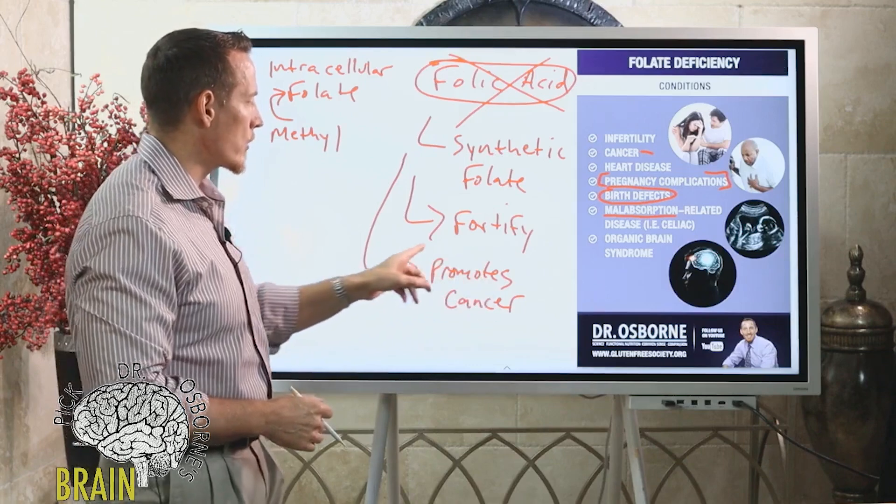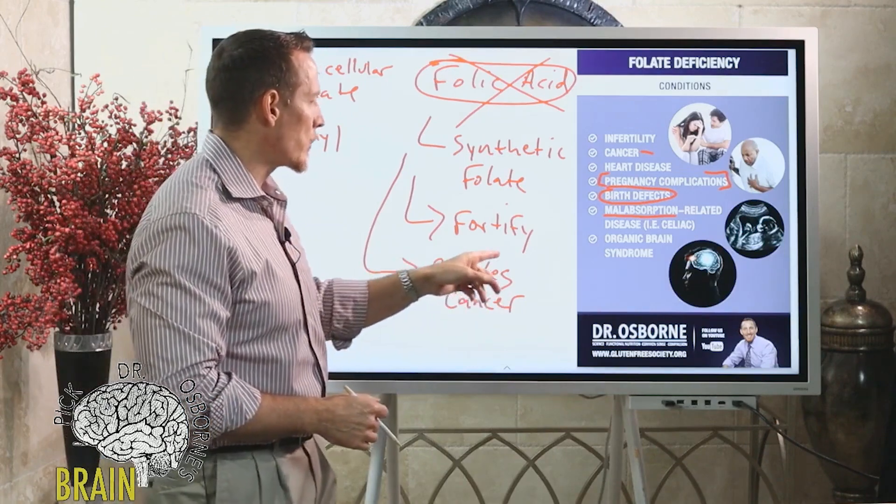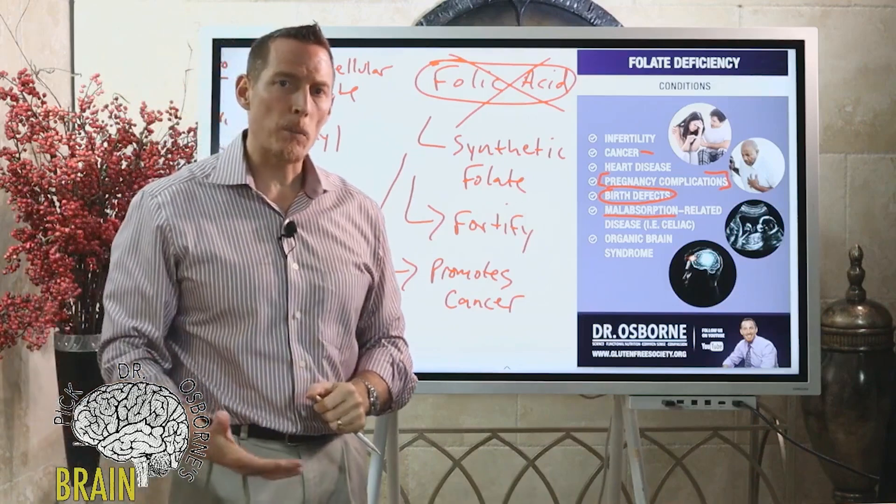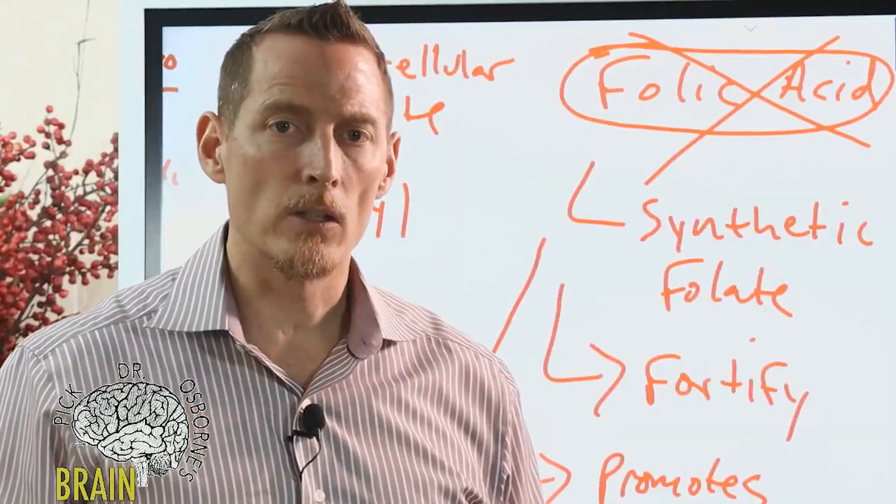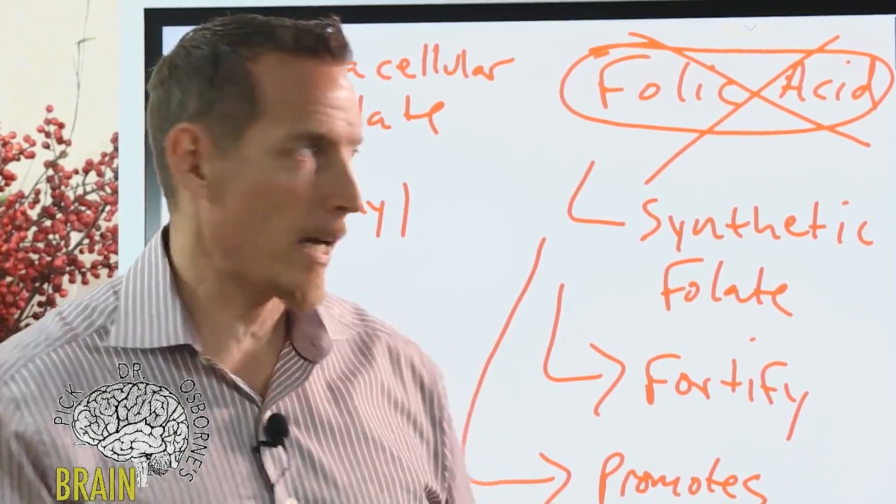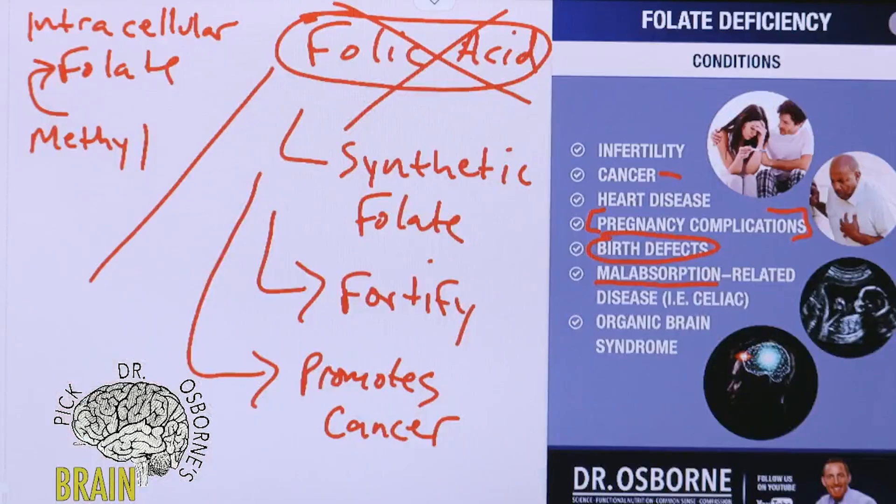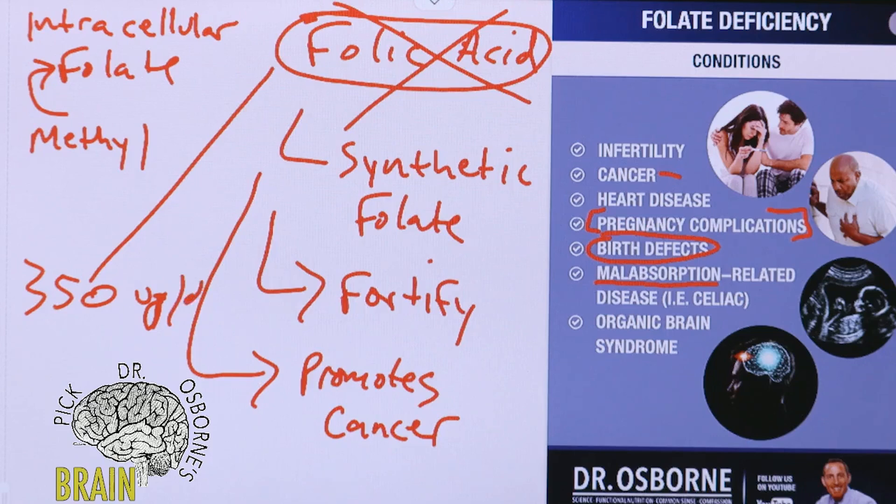Some research shows that synthetic folic acid promotes cancer. It also bogs down the methylation pathway and causes your body to need a lot more zinc to activate it, so it can actually increase the risk for zinc deficiency. Folic acid greater than 350 micrograms per day has been shown to reduce zinc levels.